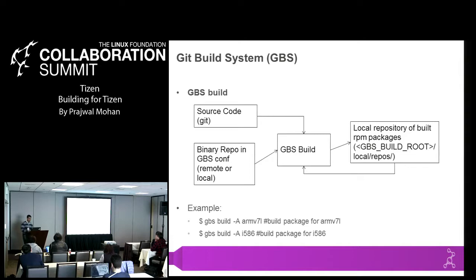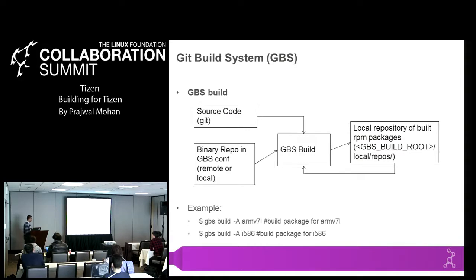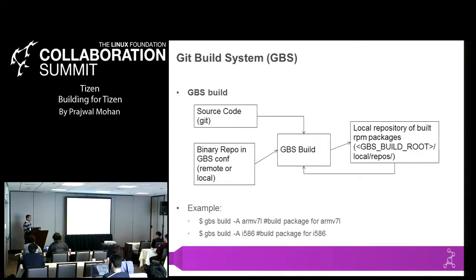An example of how you can invoke GBS would be 'gbs build -A' to mention the architecture. You can also specify a one-time URL along with the build using the -R option. We have extensive documentation on how to use GBS on source.tizen.org, and 'gbs --help' will give you all the other options. Fundamentally, you're specifying what packages to build — that would be the local directory — and what architecture you're building for, while the GBS configuration has the repo where GBS fetches all the RPMs necessary for your package to build.